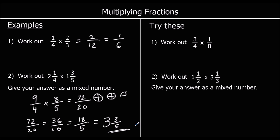Question one: three-quarters times one-eighth. We times the top: three times one is three. Times the bottom: four times eight is thirty-two. So the answer is three over thirty-two.